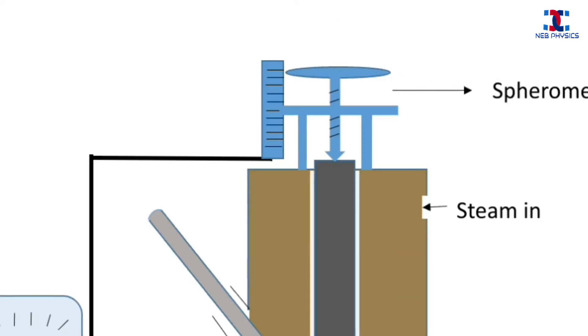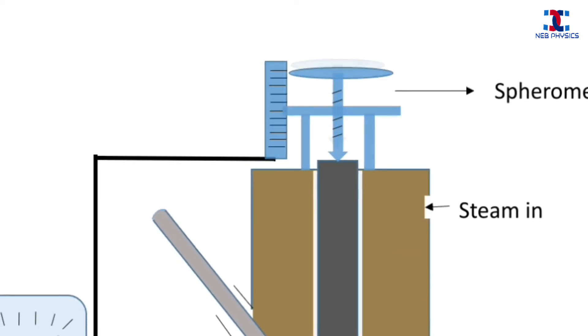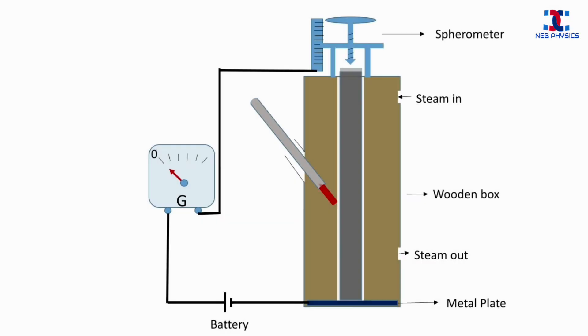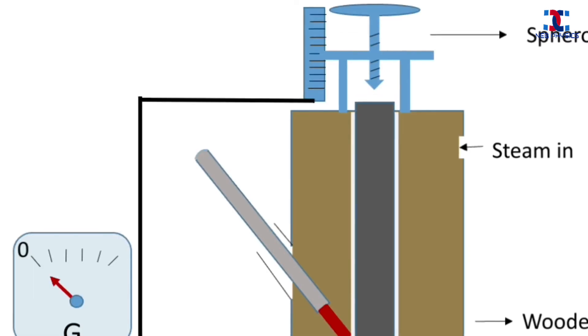Now the spherometer is unscrewed and loosened. Then the steam is passed through the inlet. The metal rod absorbs the heat from the steam and increases in temperature. Due to increase in temperature, the metal rod undergoes linear expansion, so there is a little increase in length of the metal rod.